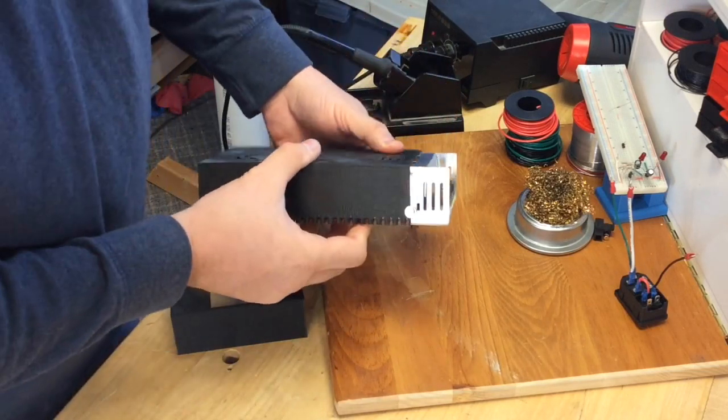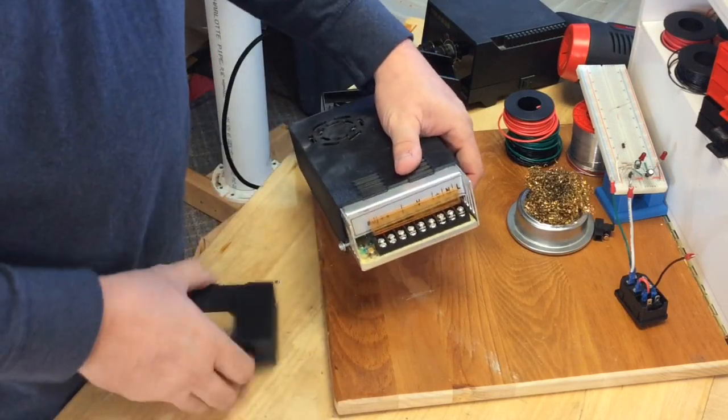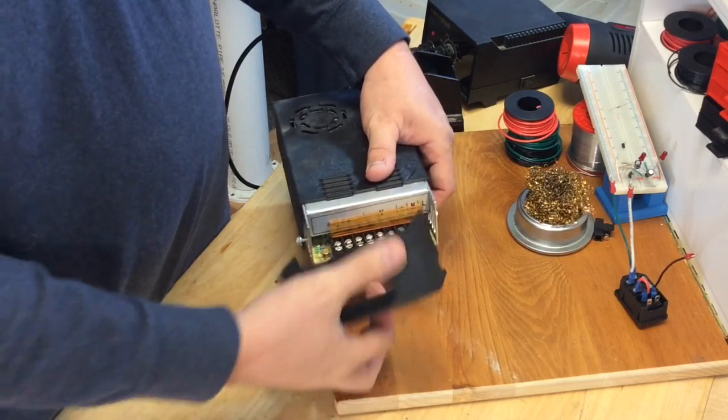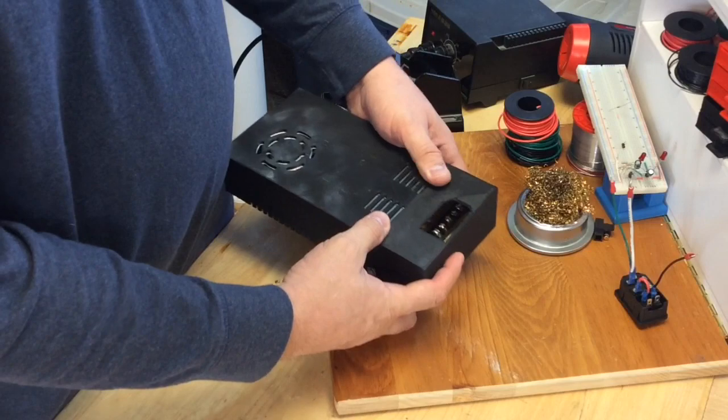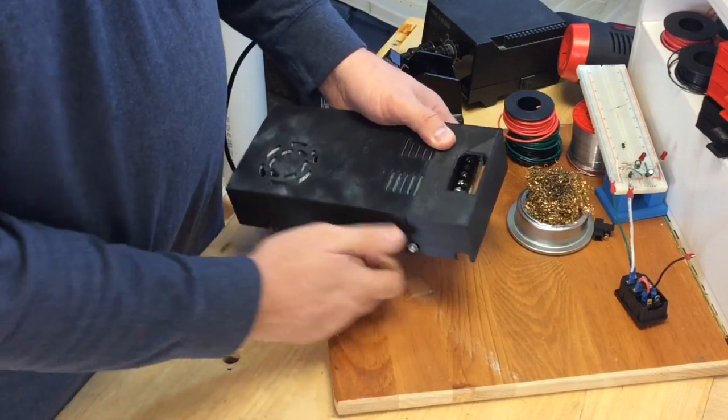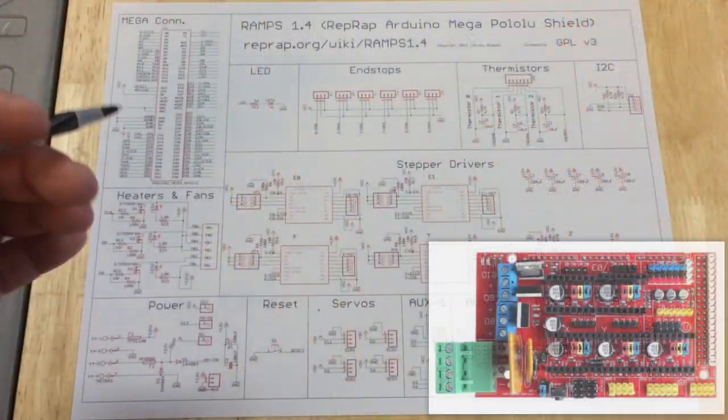But this printed really good on my FlashForge Dreamer. I just printed at a rough 0.3 layer height. So now I need to go into the calculations of the current so I can figure out what fuse I'm going to need. So here's the RAMPS schematic.